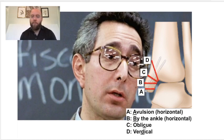So again, it's the Molar classification of medial malleolus. A is avulsion, B is by the ankle, C is oblique, and D is vertical.